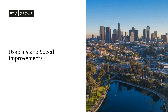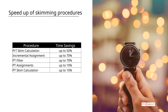Moving on to graphics, usability, and speed improvements. We have a number of speed improvements, the most exciting being up to 50% time savings in PRT skim calculations. Through modernization of how assignment paths are stored and used, we've sped that up considerably. You also see up to 70% improvement in incremental assignment and filtering of public transit, and a 10% improvement with public transit assignments and skim calculations as well.